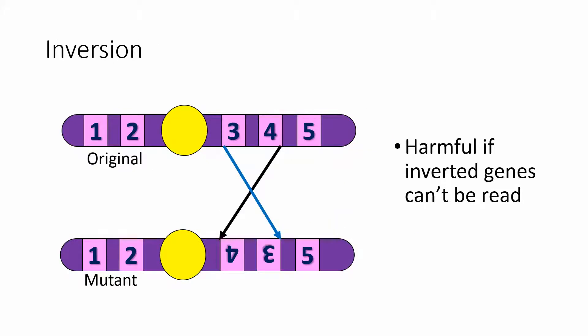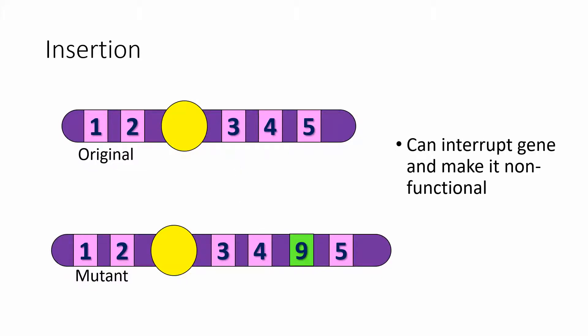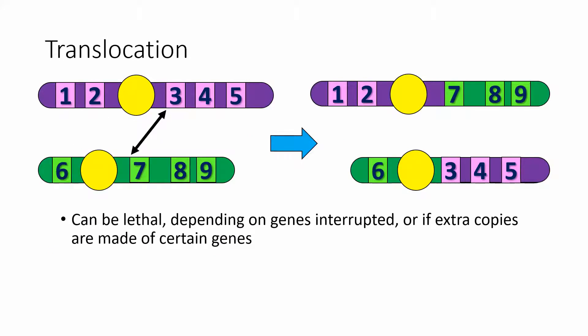An inversion occurs when a piece of chromosome breaks off and rejoins backwards. If those inverted genes aren't able to be read, it can be very harmful, especially if it's a large section of chromosome. An insertion brings in a gene from an entirely different chromosome — if inserted in the middle of a gene, it can interrupt that gene and make it nonfunctional. A translocation happens when two non-homologous chromosomes swap chunks, which can be lethal or extremely harmful depending on what genes are interrupted or if extra copies are made.